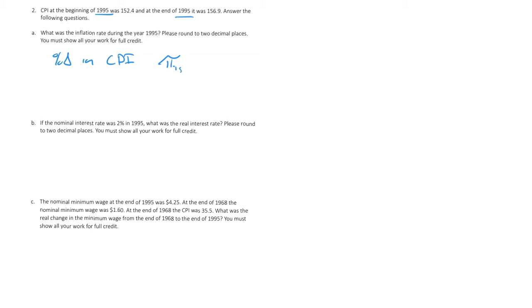So the inflation for 95 would be the second value, 156.9, minus the first value of 152.4, divided by 152.4. We multiply that by 100 in order to get this into a percentage. So that inflation rate for 1995, we'll use a calculator here. We'll get 4.5 divided by 152.4 times 100. We plug that into our calculator and we get 2.95% as our inflation rate.